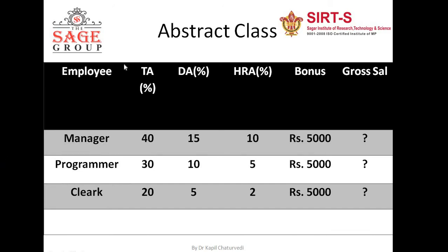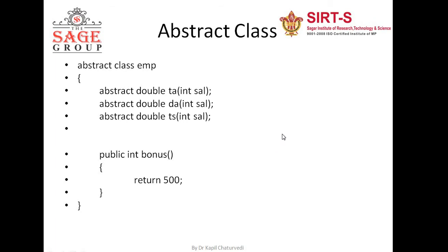We saw a scenario in which we calculate the salary of employees — manager, programmer, and clerk. We created an abstract class containing both types of methods: abstract methods TA, DA, and TTS, and the non-abstract method is bonus. A method with no body is known as abstract method, so TA, DA, and TS each have no body. If a method has some definition, then that method is known as non-abstract method. If we put this combination inside any class, then that class is known as abstract class.